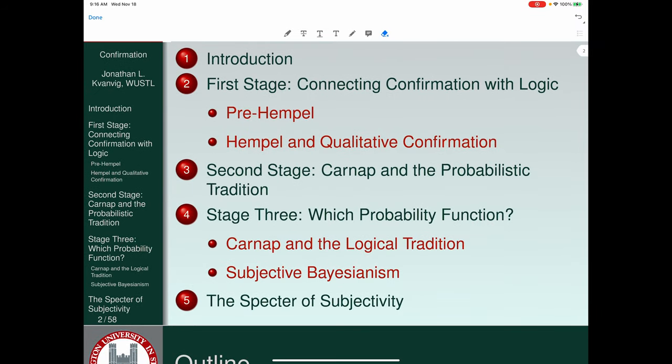So here's an outline of what we're going to do in these three lectures. I'll begin with some introductory remarks. We'll spend time on the first stage, the second stage, and then the third stage, which leads to a kind of subjective Bayesianism, the sort that we've been studying in the Teitelbaum book.